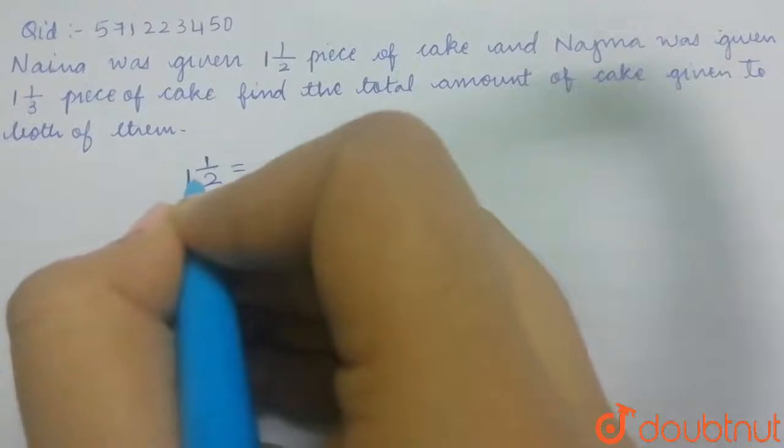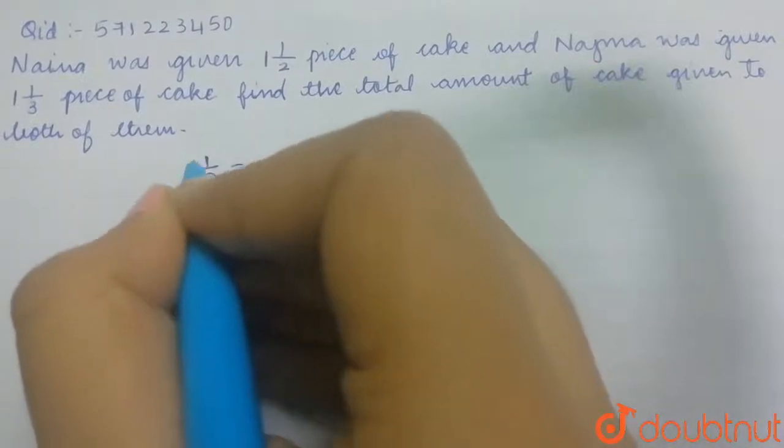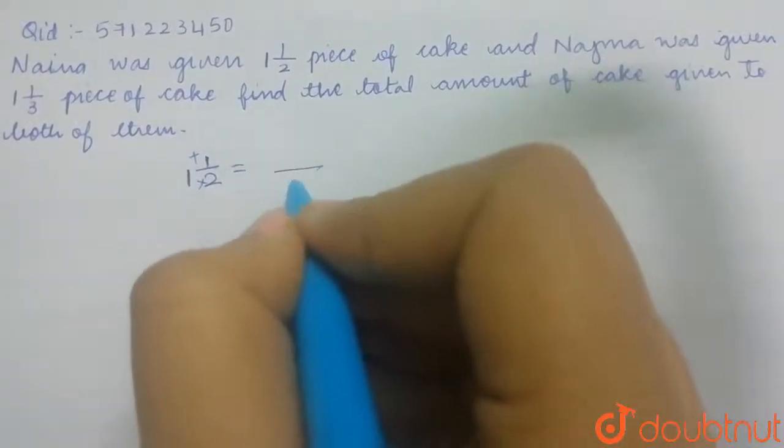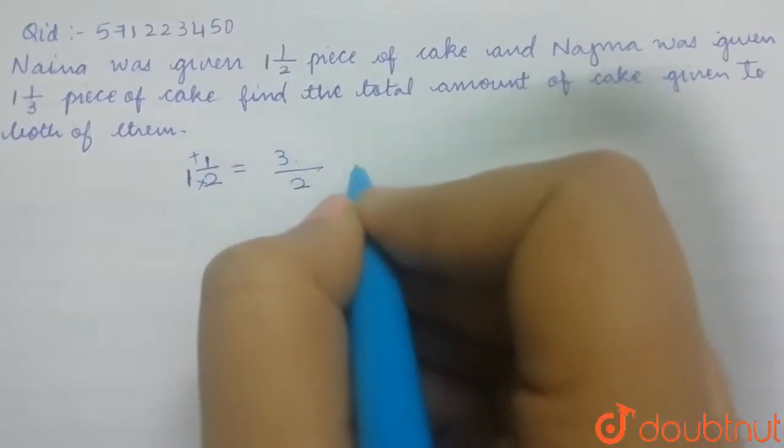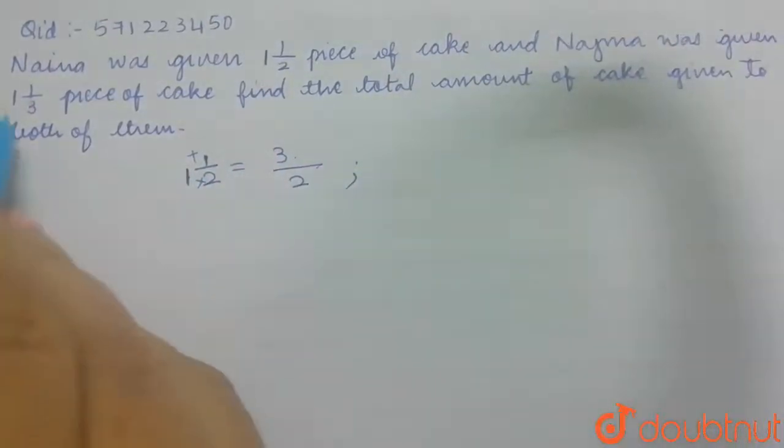Here we do multiplication and addition. 1 times 2 will be 2, 2 plus 1 will be 3. So this is 3/2.